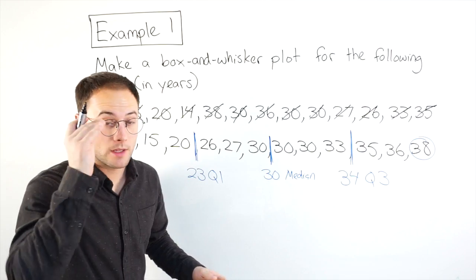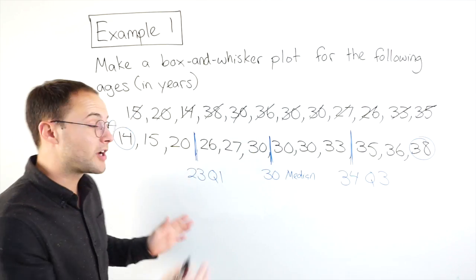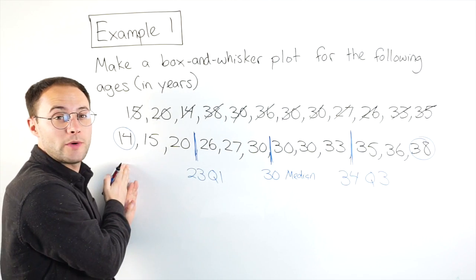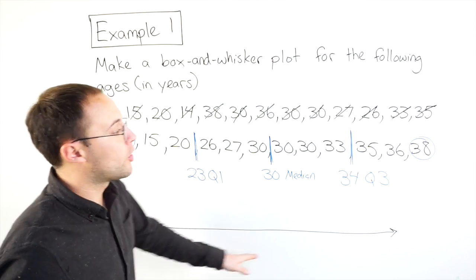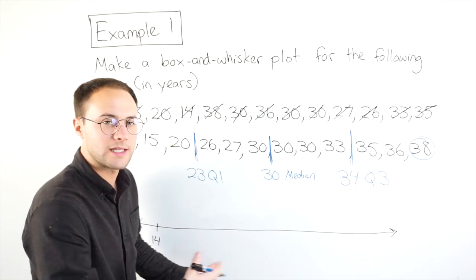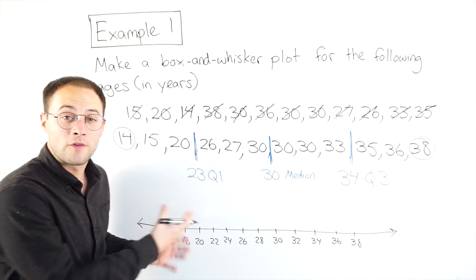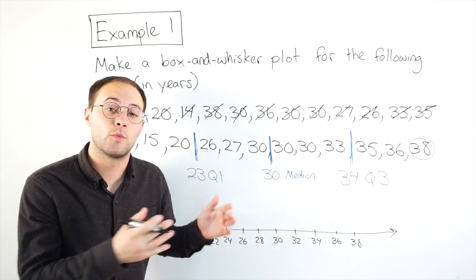First, you're going to make a number line, and your number line doesn't need to start at zero. You start wherever your least value is. So, my least value is 14. So, that's where I'm going to start. I need to go all the way up to 38. So, I think I'm going to count by twos. I don't want to count by ones because that's going to take too long. So, I've got my number line. That's ready to go. Now, it's time to make the box and whisker plot.